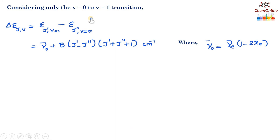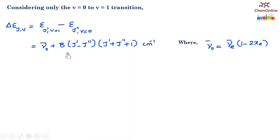Considering only the v equals 0 to v equals 1 transition, which is the fundamental transition and will be the most intense: delta epsilon(j,v) equals epsilon(j', v=1) minus epsilon(j'', v=0). This equals ν̃_0 plus B(j' minus j'')(j' plus j'' plus 1) centimeter inverse, where ν̃_0 equals ν̃_e(1 minus 2x_e). Here j' represents the upper state and j'' represents the lower state.